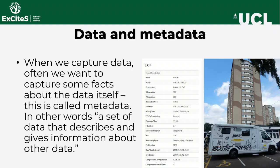Let's now look at the next core concept: data and metadata. Another important differentiation we need to pay attention to is the one between data and metadata. Here is an example to make this easier to understand. Our data is a picture of a science bus that visited a community center in Birmingham during the Doing It Together Science project. The data in this case is an array of color values that together make up the image, with the specific value of each pixel creating the data itself.